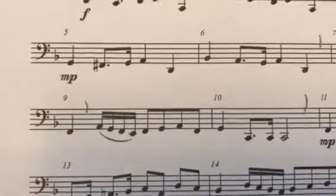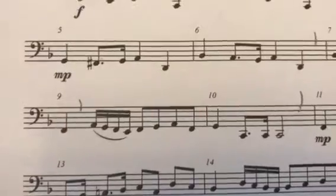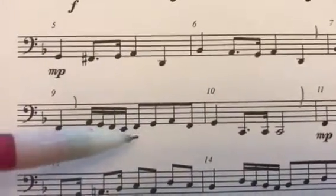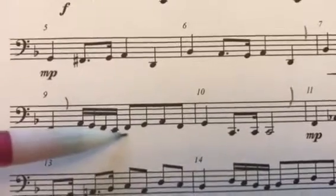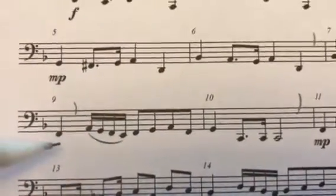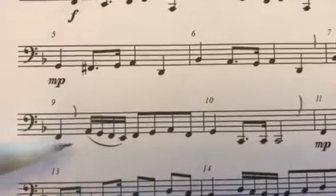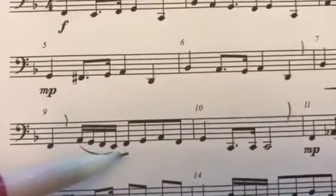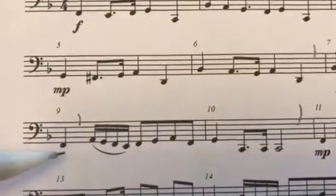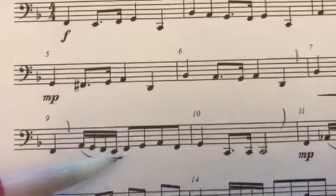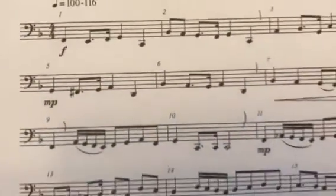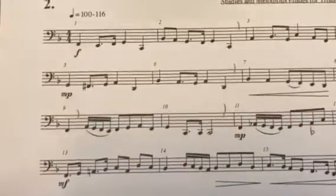I want to point out that this F right here — you've got to tongue that F, but you just slurred everything else. So if I were singing that: toh, toh, toh, toh. I didn't sing the right notes, but the articulation is right there. That's how it'll sound. You've got to make sure you tongue in the right place with those slurs.